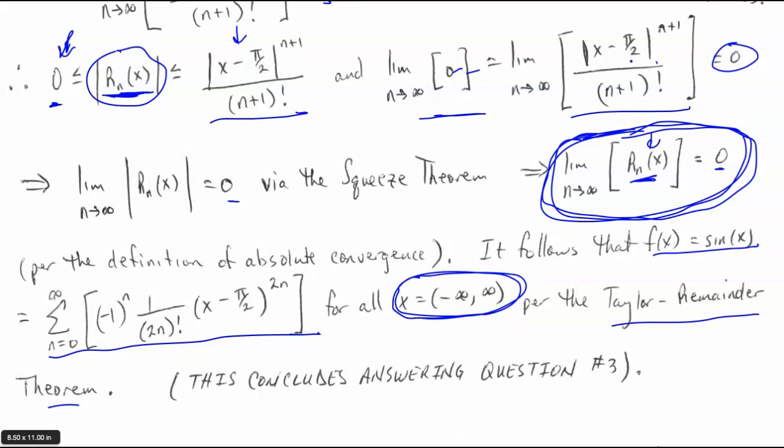Because of that, it follows that our function sine of X can be represented as its power series for all values of X, per the Taylor Remainder Theorem, since we've shown the limit of the remainder part equals zero and the X values that work are any real number. This concludes this video on applying the Taylor Inequality Theorem and the Taylor Remainder Theorem to show that a particular power series exactly matches the function it represents over a range of X values. In the part three video, we'll look at a list of McLaurin series and then use that list to help us do more problems.